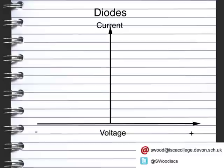However, in a diode there is no current when there is a negative voltage. So if the voltage is negative there would be no current, yet as you increase the voltage in a positive direction it would end up becoming positive current.